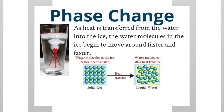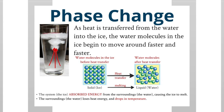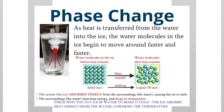The ice went from a solid to a liquid — colloquially known as melting. The ice melts as a result of the transfer of heat energy from the water into the ice. The system, which is the ice, absorbed energy from the surroundings, which is the water, causing the ice to melt. The surroundings lose heat energy and drop in temperature — this is why you put ice in water to make it cold.